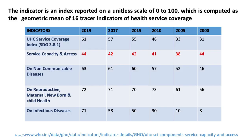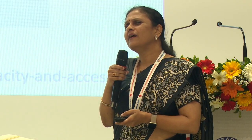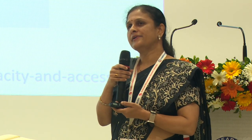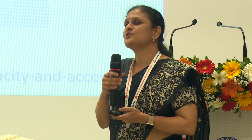In numerical terms, the indicators show steady, good progress India has made from 2000 until 2019, except for some issues related to service capacity and access. Students may want to ponder upon this.